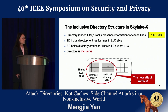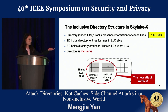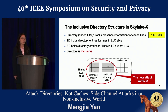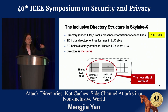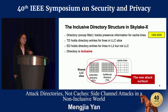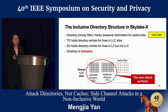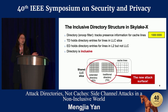In an inclusive cache you also have a directory — just the traditional directory — but you cannot directly see it. When people attack the inclusive cache, they are also attacking the directory because of the one-to-one mapping.